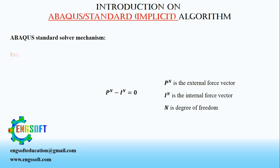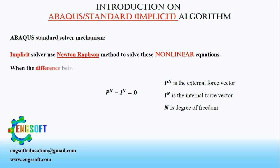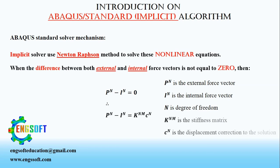Implicit Solver uses Newton-Raphson method to solve these nonlinear equations. When the difference between both external and internal force vectors is not equal to zero, it is equal to stiffness matrix multiplied by a correction factor. According to the equation, K is the stiffness matrix and C is the displacement correction. Implicit Solver uses an iterative algorithm to solve this static equilibrium, and convergence is achieved when the solution reaches a stable state.